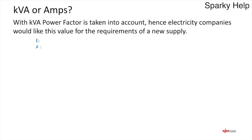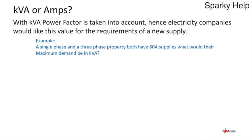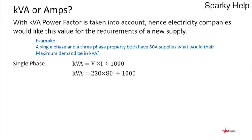So how do we actually work this out? We have a single-phase and a three-phase property, both with 80 amp supplies. For a single-phase installation, KVA is volts times amps divided by 1000 to give us K. So that's 230 × 80 ÷ 1000 = 18.4 KVA. So what you'd write on your test sheet is delete amps and write 18.4.